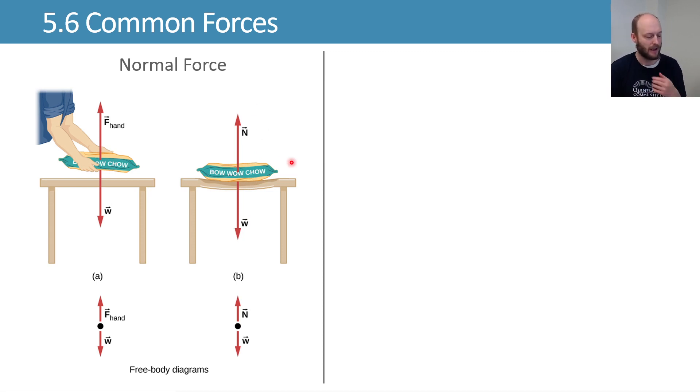This is a reaction force that is preventing this Bow Wow Chow from going through the table. It's called a normal force because it's normal to the surface. So this is a surface-surface interaction where you've got something resting on a surface, and there will be a normal reaction force that's acting normal or 90 degrees to the surface. So at a 90 degree angle there to whatever surface you're resting on, there will be a force resisting that motion.